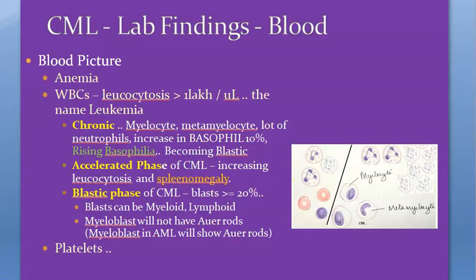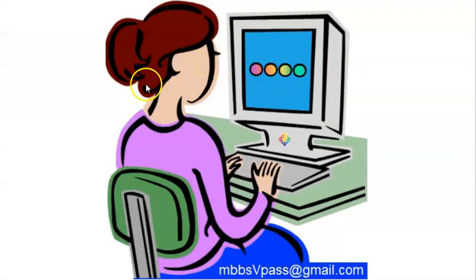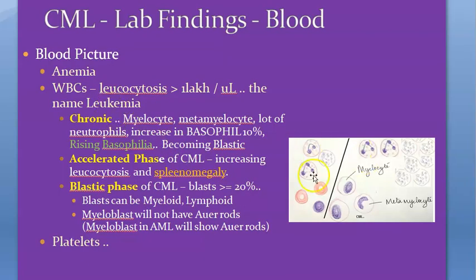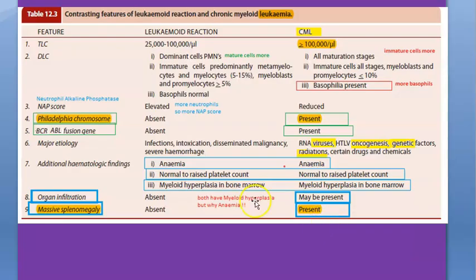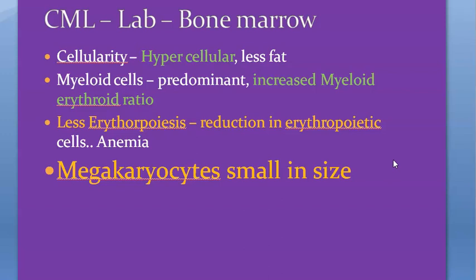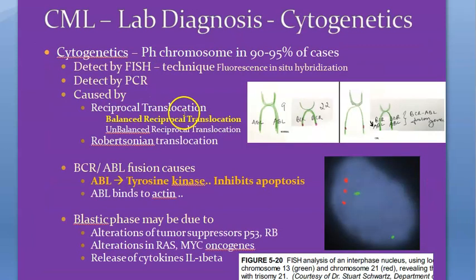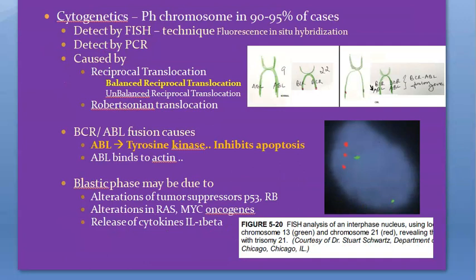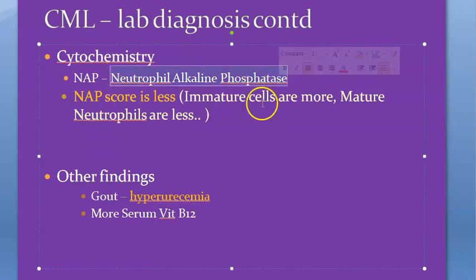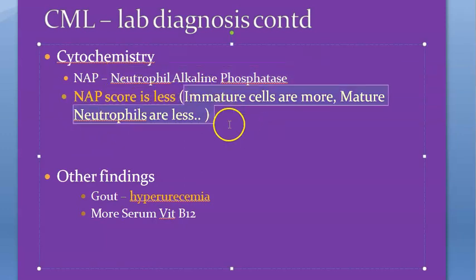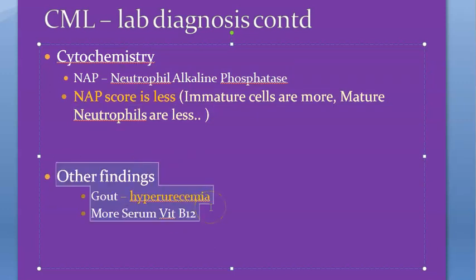In the blood picture of CML you will see myelocytes. You can draw the differentiation diagram in the exam. The bone marrow will be hypercellular, as expected in leukemia, and there will be an increased myeloid to erythroid ratio since myeloid cells predominate. You will need to confirm BCR-ABL positivity - the FISH technique can be used to detect the Philadelphia chromosome. Mature neutrophils are also increased.